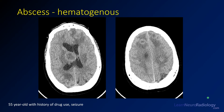Abscesses can also be hematogenous. Here is a 55-year-old with a history of drug use presenting with seizure. On head CT, symmetry is your friend, and in this case there is a lot of asymmetry of the thalamus and basal ganglia. The ventricles are markedly displaced, with areas of edema throughout the hemispheres bilaterally. At higher levels you can glimpse ring lesions in the basal ganglia and frontal lobe, raising deep suspicion for metastatic disease or abscess.